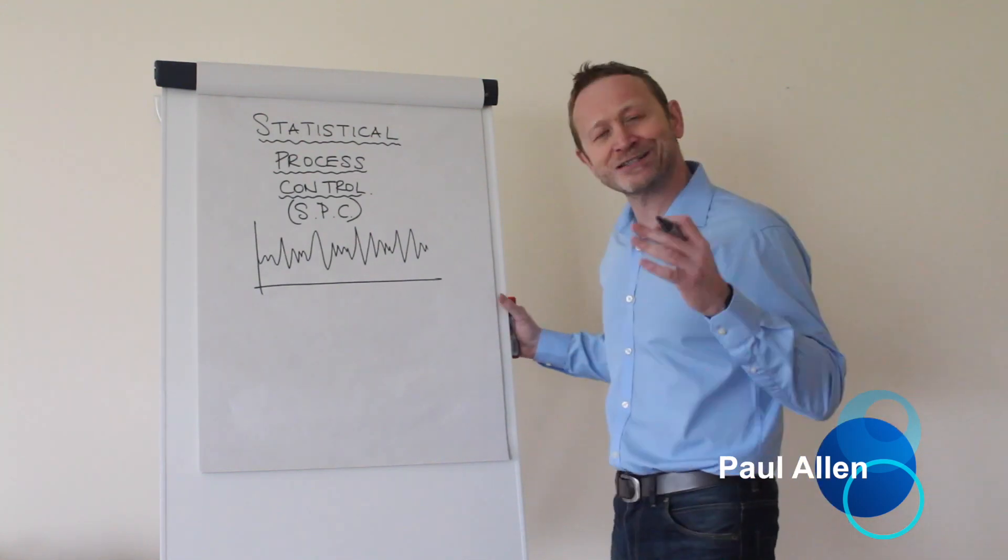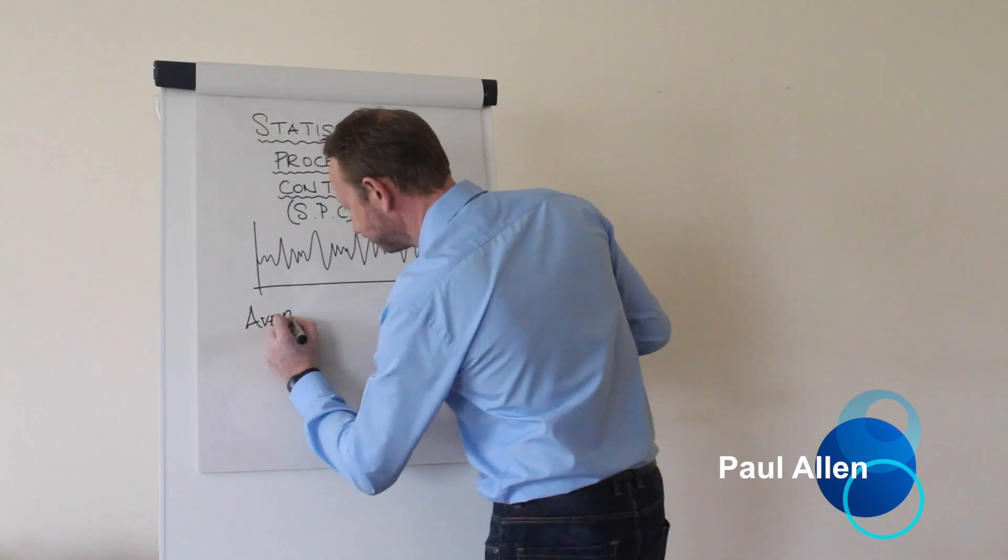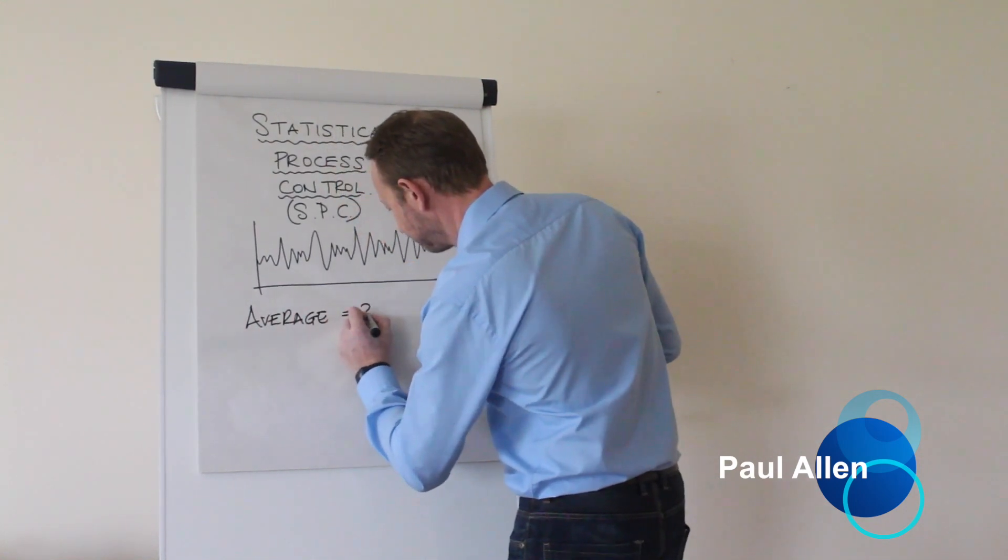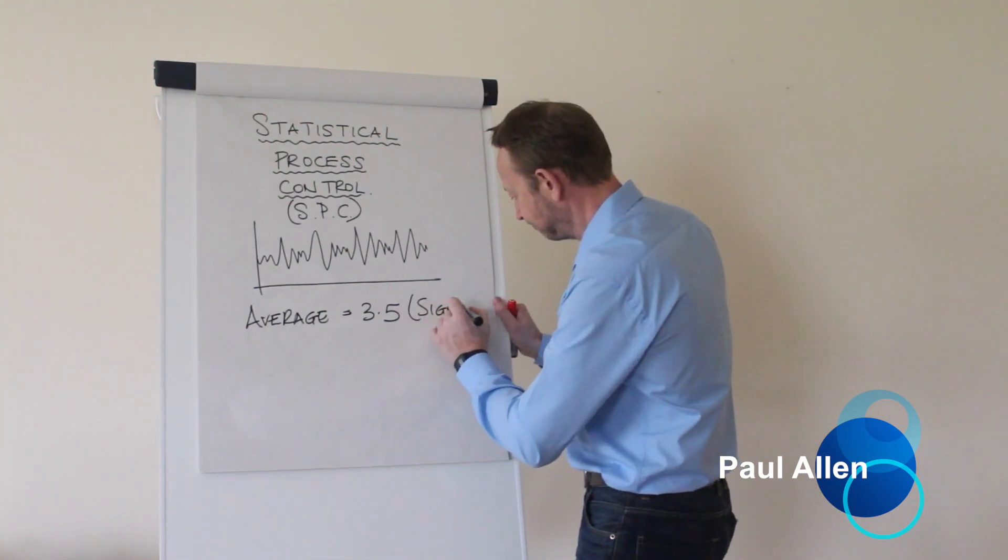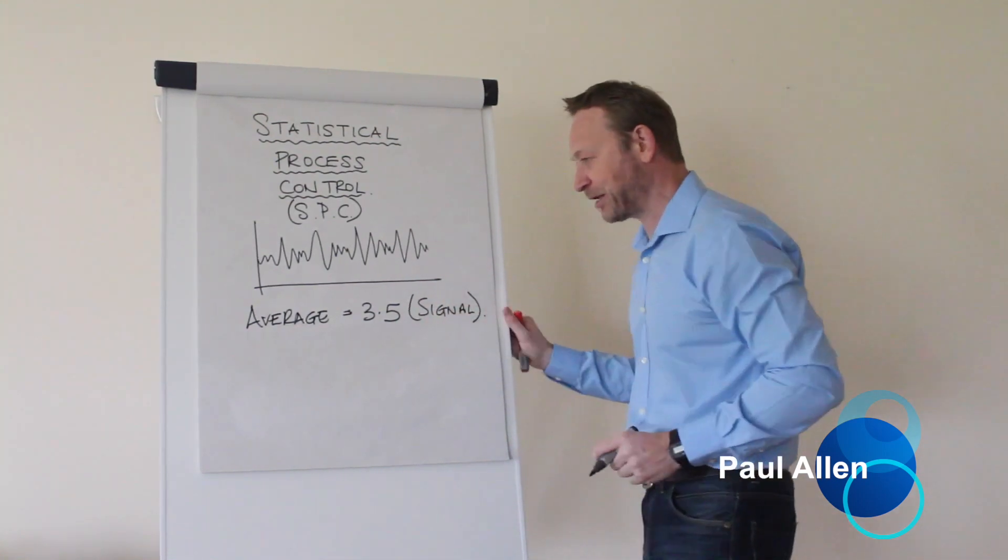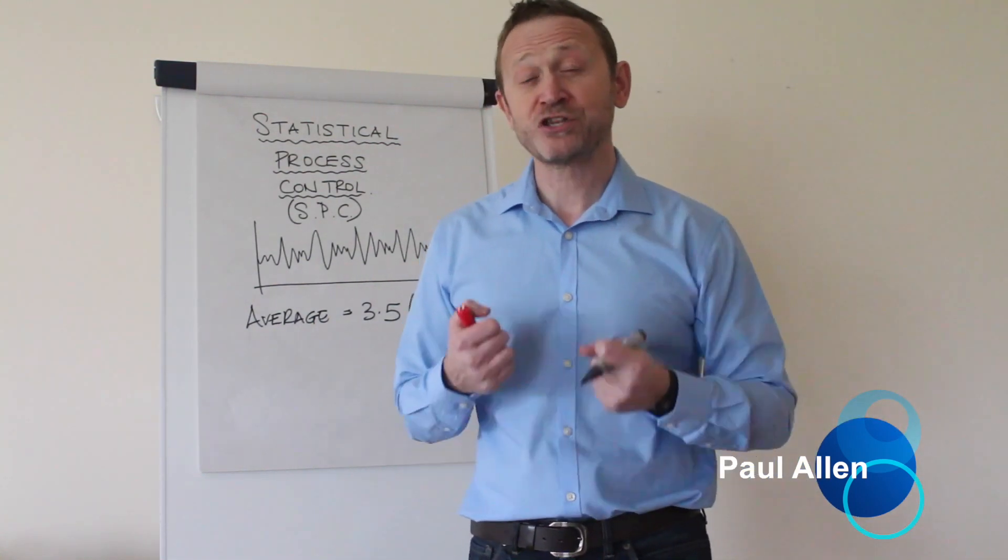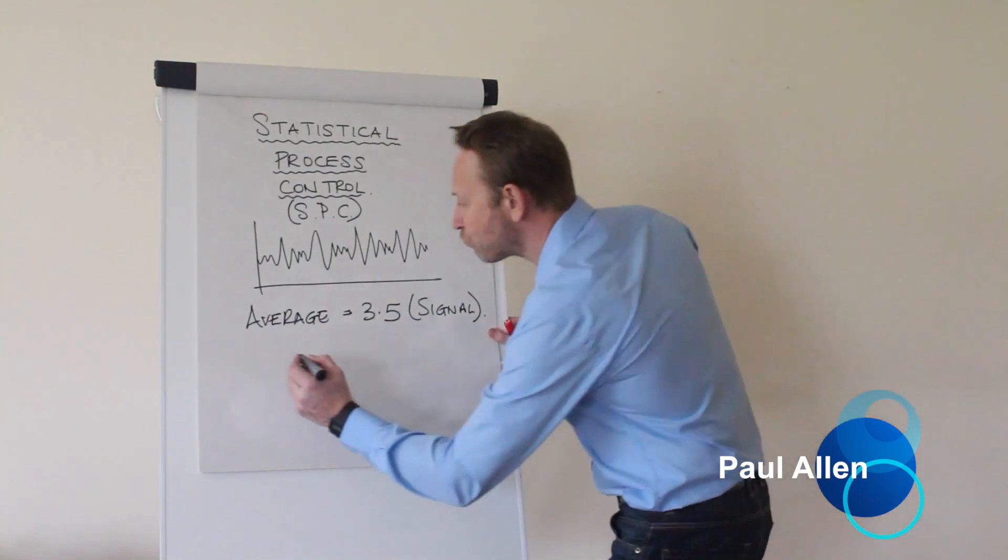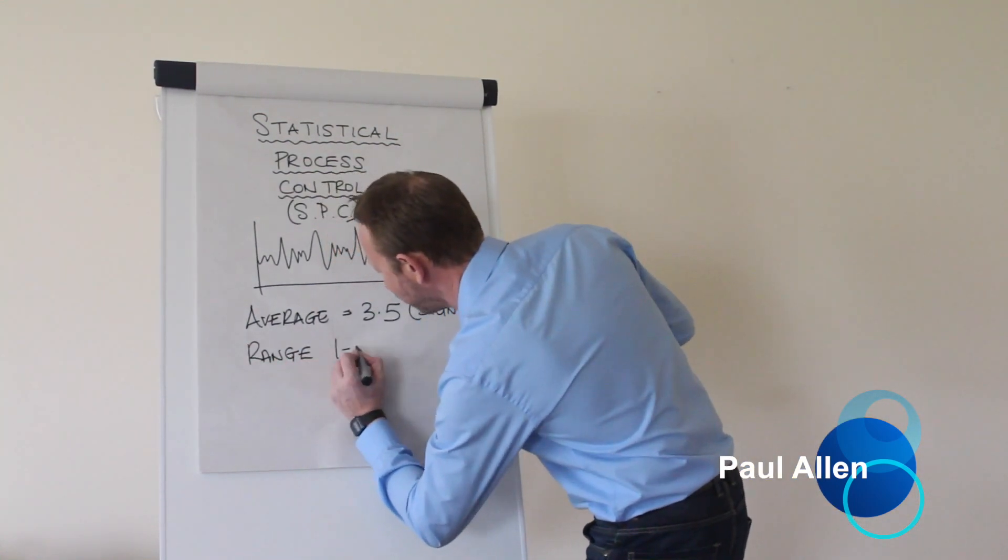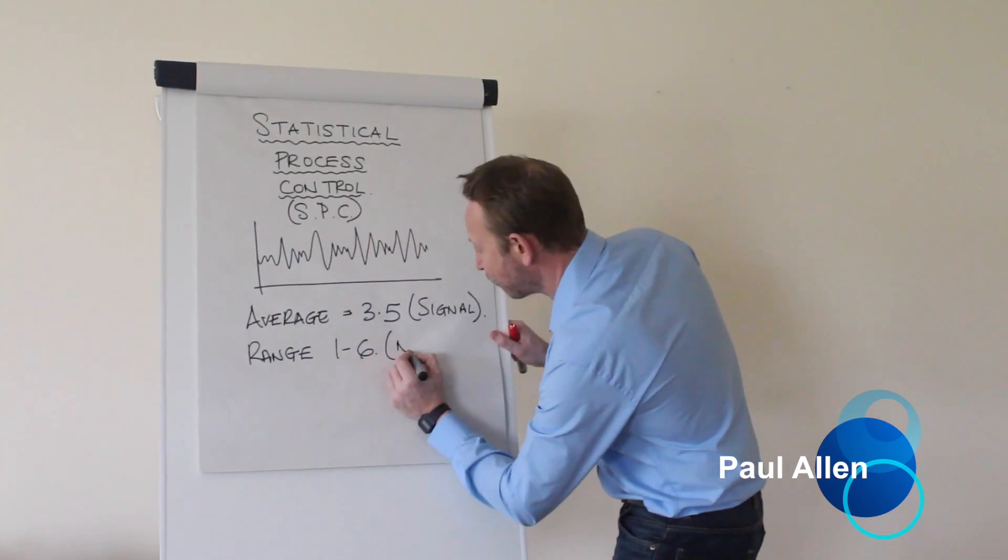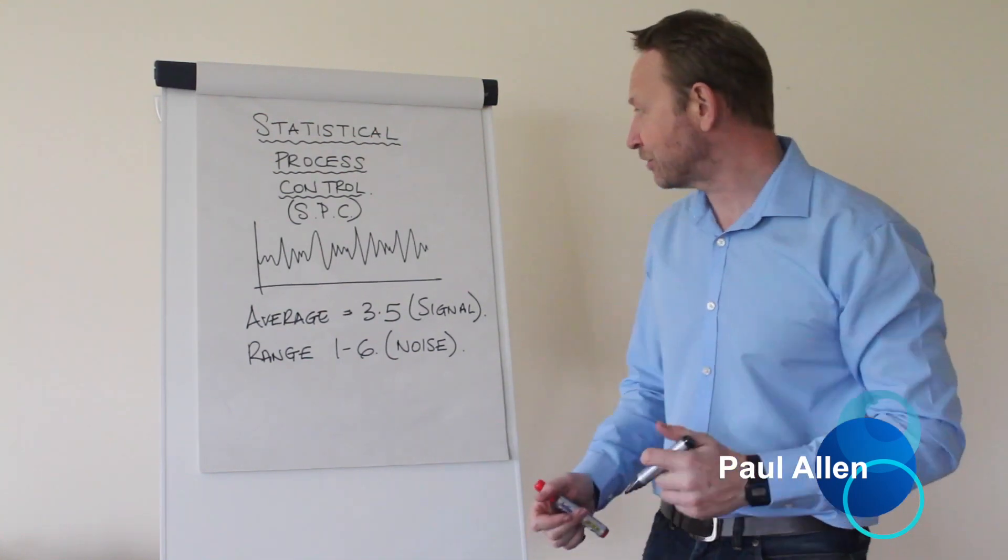The first thing is I understand the average of my process. So the average on a dice, 3.5. I would also call that the signal coming out of that process. I could also understand the range of the process, the noise in the process. So the range on a dice, of course, is one to six. That's the range, and I would also call that the noise. So I can understand the signal, I can understand the noise.